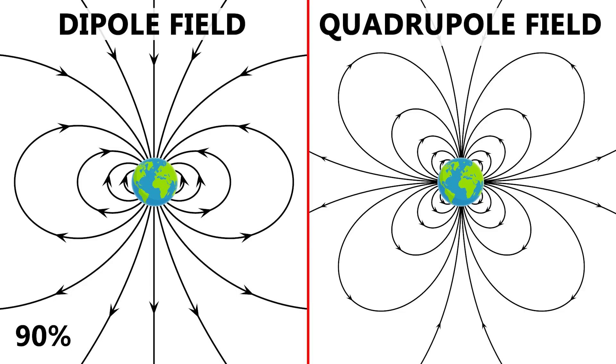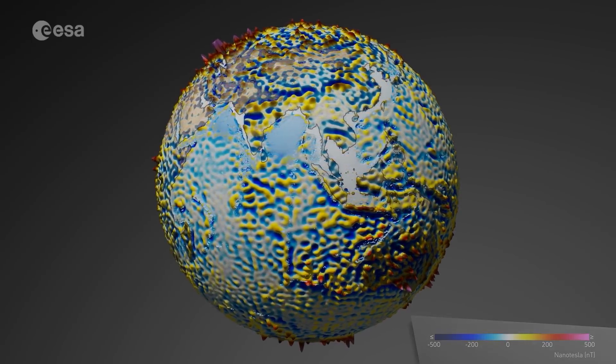About 90% of Earth's magnetic field can be represented by a simple dipole, but the other 10% is composed of variations like higher order poles, quadrupoles, octopoles, magnetic anomalies, and more.